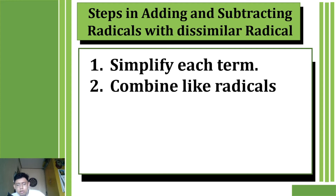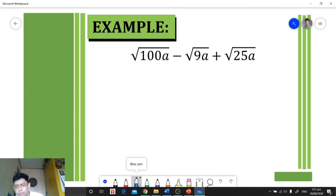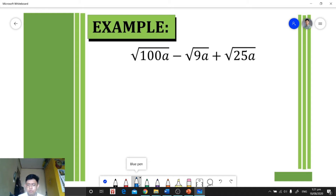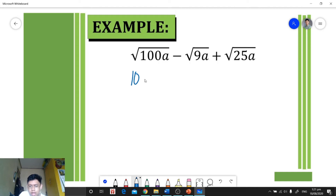Let's move on to our first example. We're given this expression and we're going to simplify it. Since we have dissimilar radicals, we need to simplify each term. For the first term, the square root of 100 is 10, and the square root of a cannot be simplified, so we have 10 square root of a.